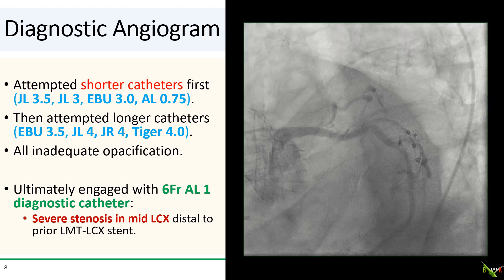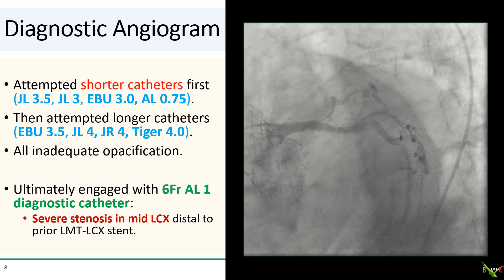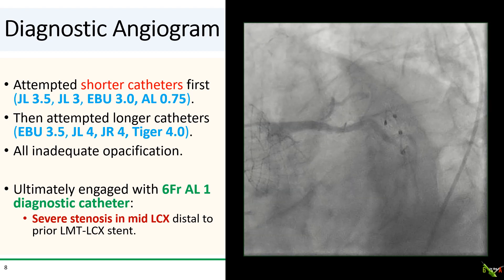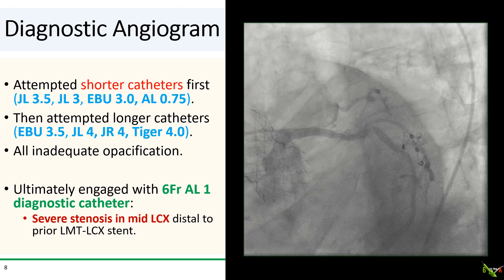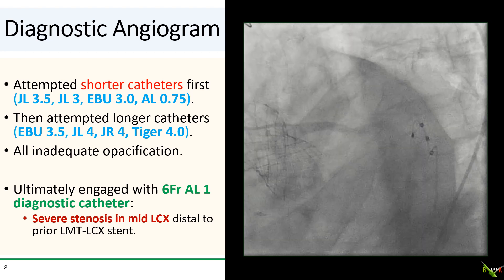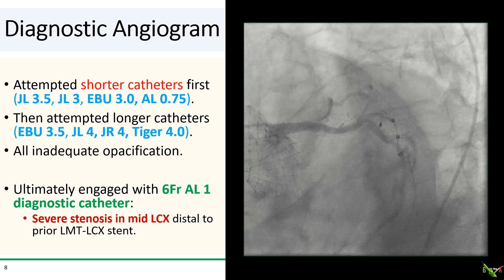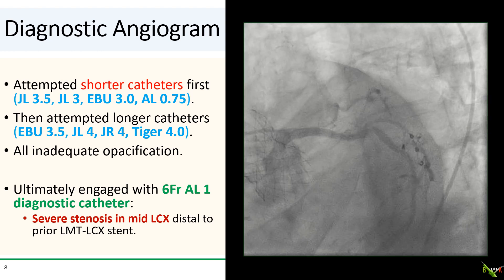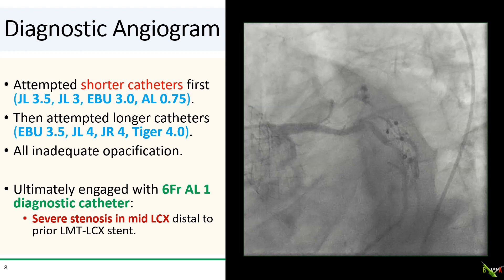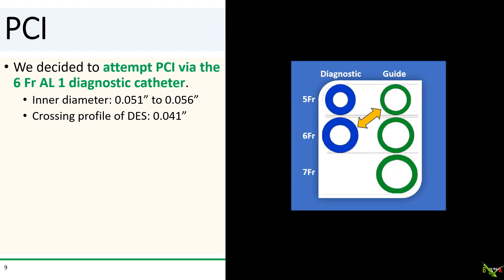So what do we do now? I had such a hard time even just getting a tenuous engagement that I was not confident at all that I would be able to re-engage the left main with a guide. So I decided that I would attempt PCI via the 6 French AL1 diagnostic catheter itself, rather than a guide.